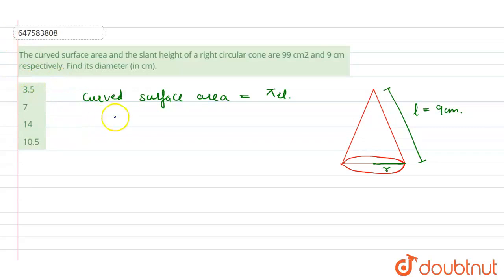Now, putting the values π R L. Pi is 22/7, or we can take it as 3.14. Taking 22/7 × R × L, that is 9 cm given in the question, equals curved surface area, that is 99 cm squared.